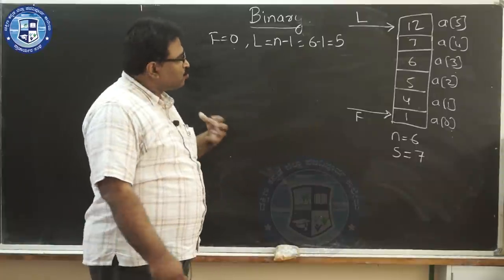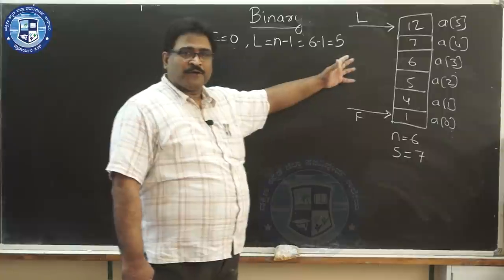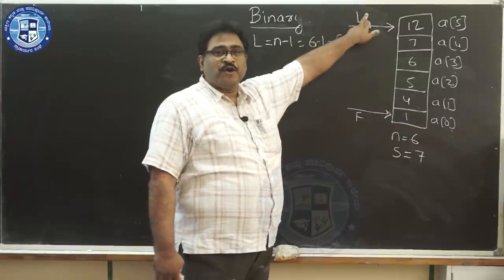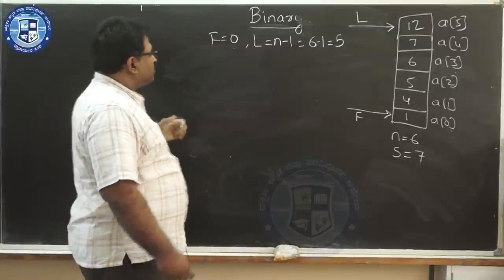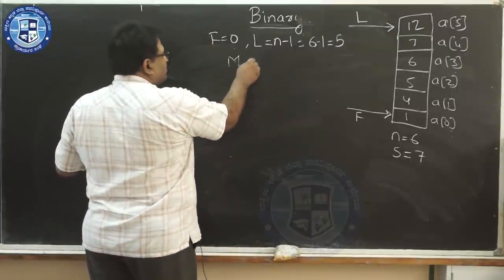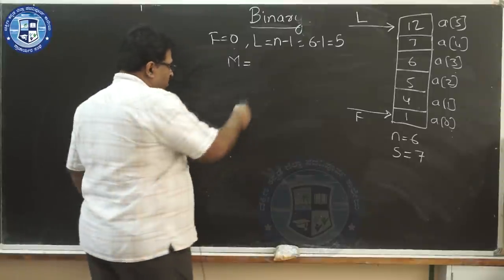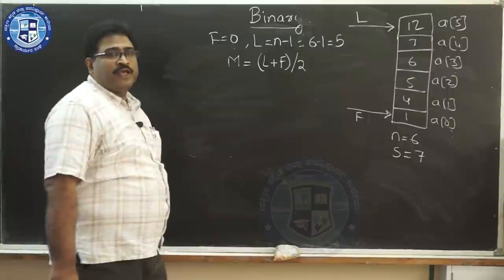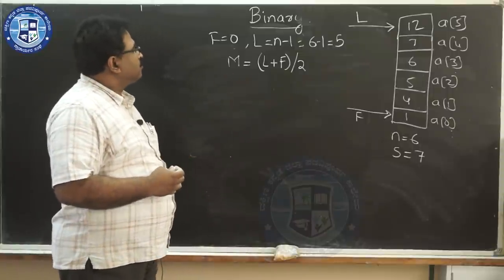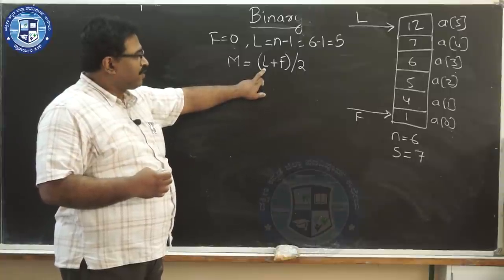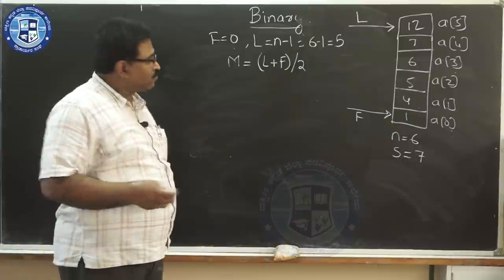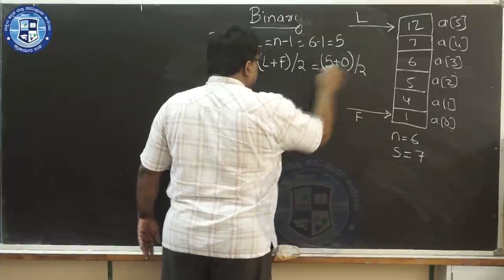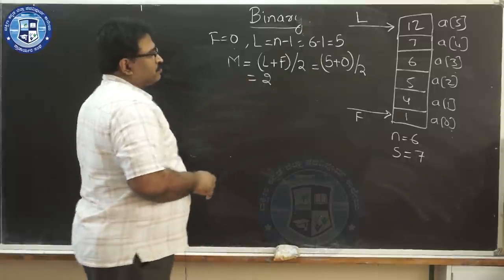So the midpoint m is at subscript 2. We ask: is a[m] equal to the value we are searching for, which is 7? What is in a[2]? It is 5 — not equal. When comparing two numbers there are three possibilities: equal, lesser, or greater. We checked the first possibility — it is not equal, so we continue.